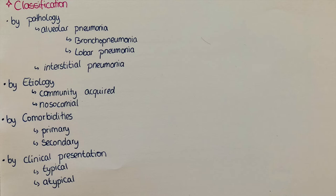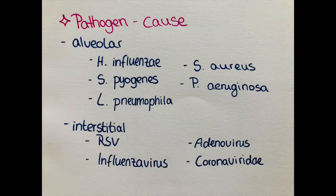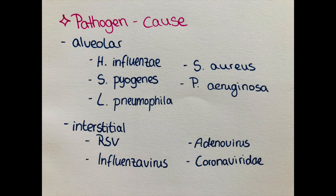We can also divide pneumonia by clinical presentation: either typical, meaning alveolar pneumonia, or atypical, meaning interstitial pneumonia. Different pathogens are known to be specific for each type. For the alveolar or typical type, it's usually Haemophilus influenzae, Streptococcus pyogenes, Legionella pneumophila, Staphylococcus aureus, or Pseudomonas aeruginosa, which is especially seen in cystic fibrosis patients.